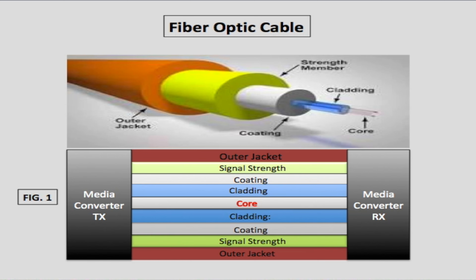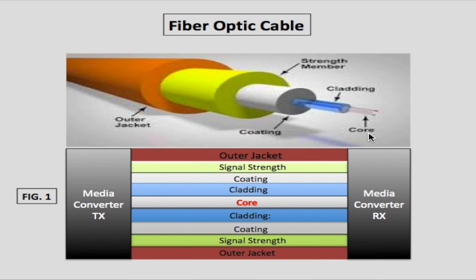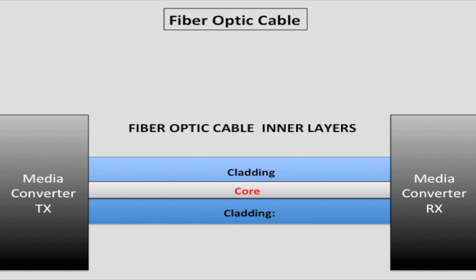Finally, we have three layers of protective coating around the cable to shield it from physical damage. On top here we have a pictorial view of a fiber optic cable. In the middle of the cable we have the core; surrounding the core is the cladding — they're both made of glass. The rest of the cable is just there for protection. We have three layers of protection, and the outer layer is called the outer jacket.